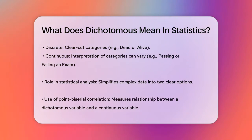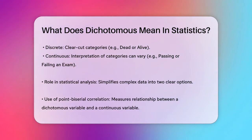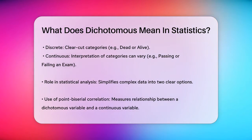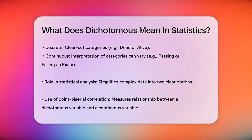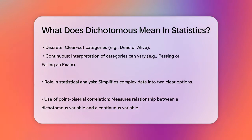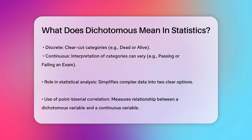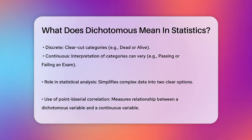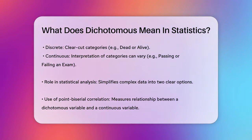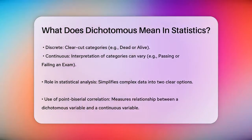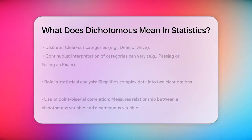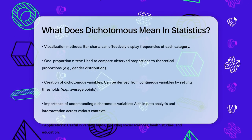To visualize dichotomous variables, you can use simple bar charts to show the frequencies of each category. For instance, if you're looking at the gender distribution in a dataset, a bar chart can show how many males and females there are. When analyzing these variables, you might use a one-proportion z-test to see if the observed proportion of one category matches a theoretical proportion. For example, you could test if the proportion of males in a population is equal to 50%.